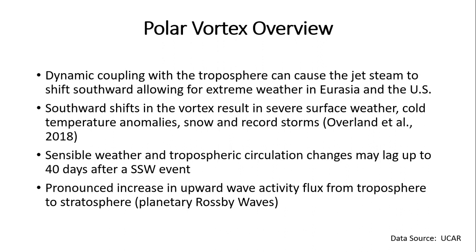The dynamic coupling between the troposphere and stratosphere can cause the jet stream to shift southward, allowing for extreme weather conditions in both Eurasia and the United States. Southward shifts in the vortex can result in anomalously cold temperature anomalies as well as snow and record storms — per Overland et al., 2018. We can also get snow in some very unusual places that normally don't see it.